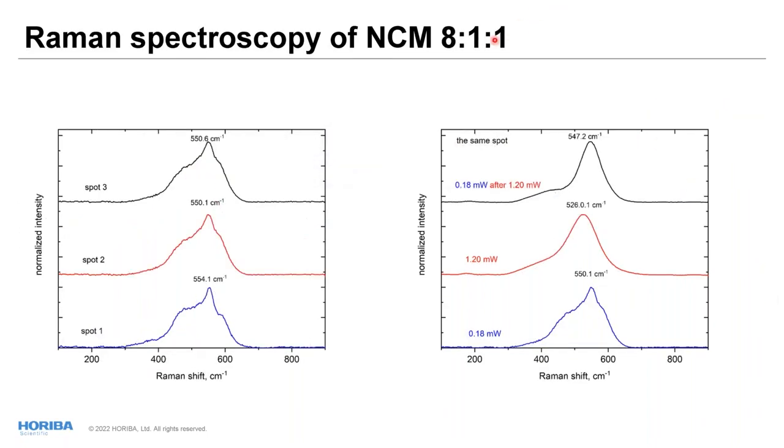This is NCM 811 materials. You have to use a power less than 0.5, 0.2 milliwatts to get the real good spectrum. You see here the spectra look very similar in three points. And again, strong influence of laser power. As you can see, in low power, we have a very good band. Once we increase the power to 1.2, almost 10 times, we're getting a broad band. And it's broad band when starting to do the same point is not returning to the original position. It's still broad and still getting really broad.